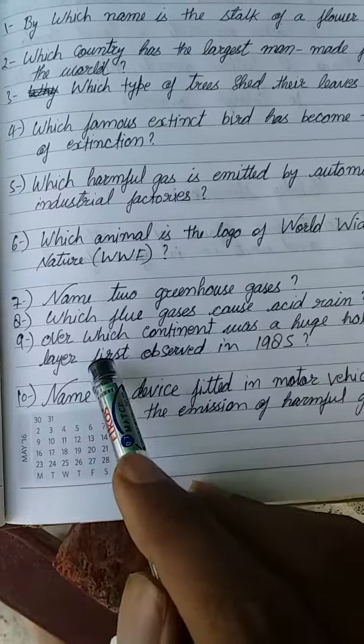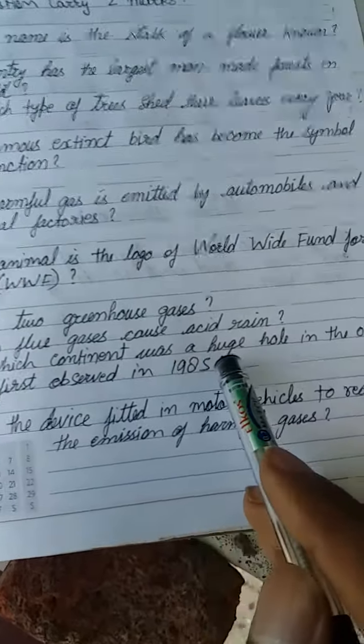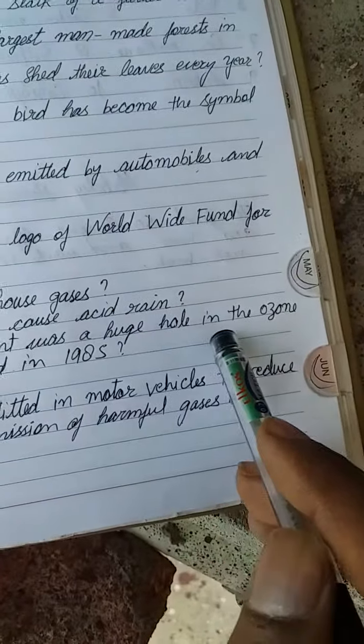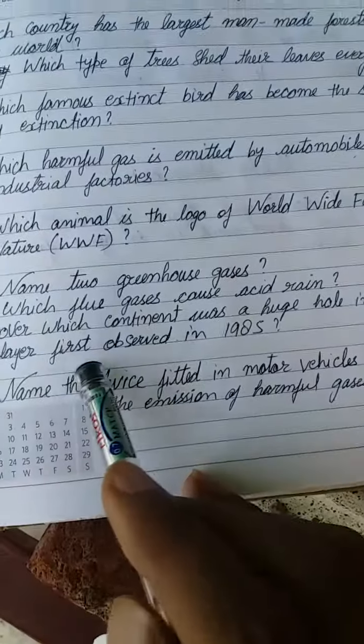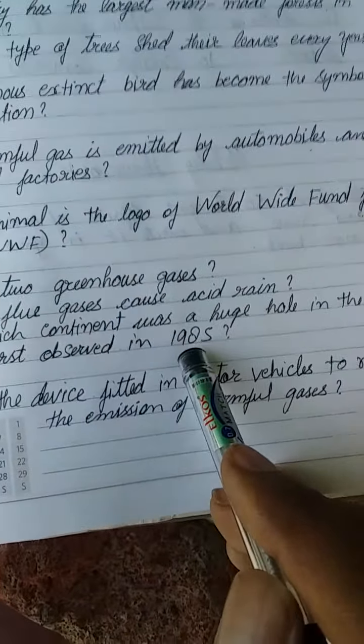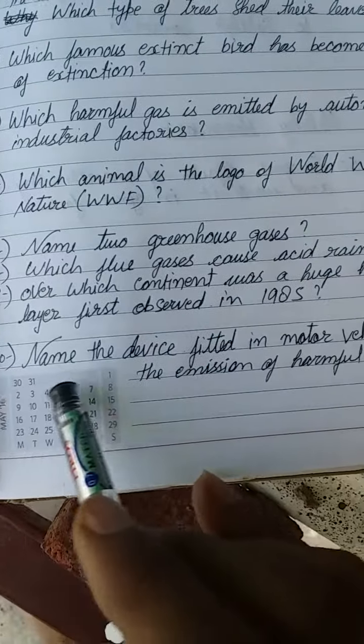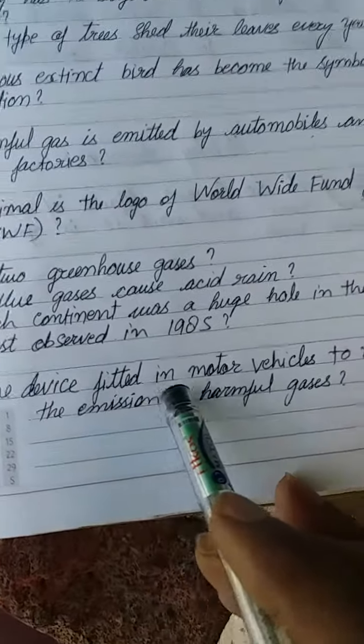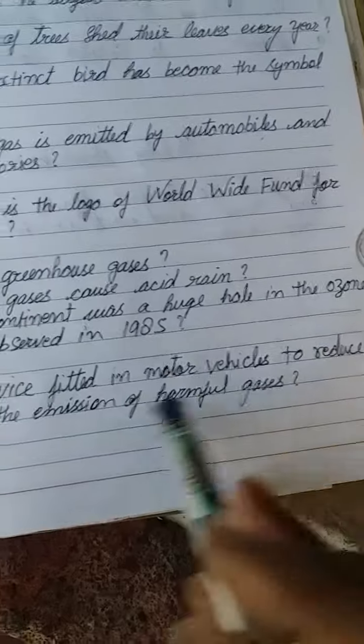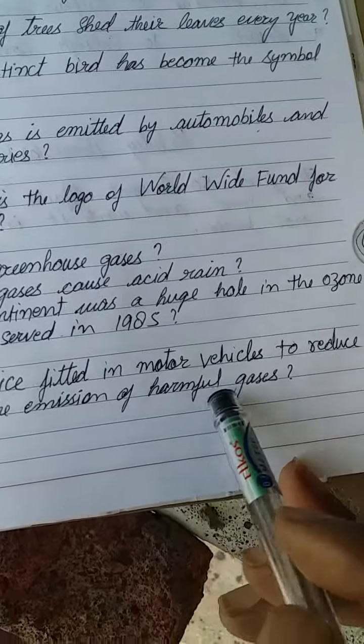Ninth question: Over which continent was a huge hole in the ozone layer first observed in 1985? Tenth question: Name the device fitted in motor vehicles to reduce the emission of harmful gases.